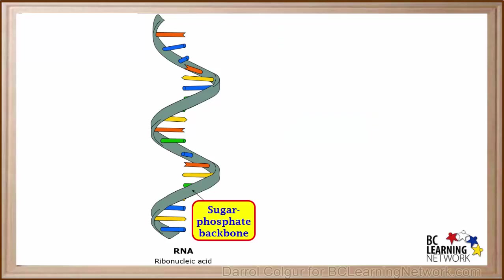The green helix represents a sugar phosphate backbone. It is similar to the one in DNA, except the sugar in RNA is different.